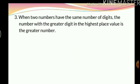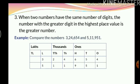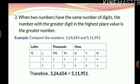Now let's move on to rule number 3. When two numbers have the same number of digits, the number with the greater digit in the highest place is the greater number. For example, we have 3,24,654 and 5,11,951. When we put them in the place value chart, they have the same number of digits, so we can't use rule number 1. We compare the values in the highest place value, which is lakhs. One number has 5 and the other has 3 in the lakhs place. Since 5 is greater than 3, 5,11,951 is greater than 3,24,654.